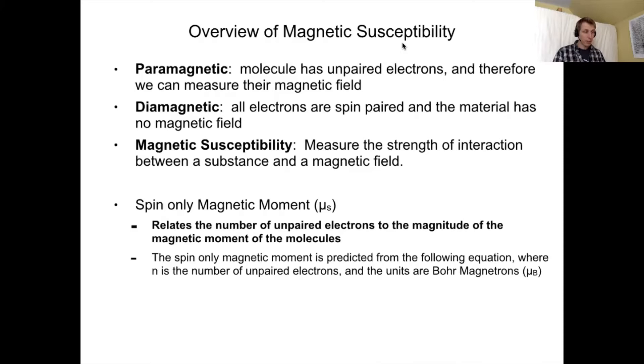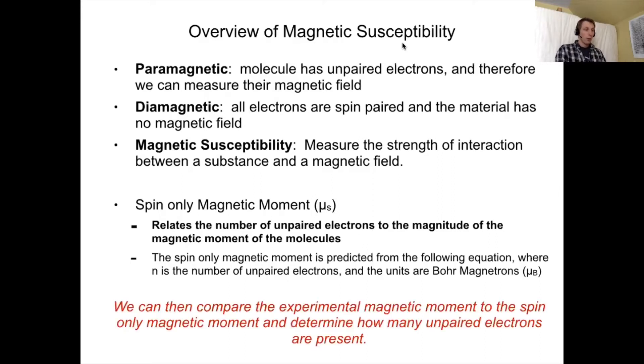We have what's known as the spin-only magnetic moment. This is a theoretical calculation and this is what we're going to compare to our experimental value that we gathered in lab. This relates the number of unpaired electrons to what the magnetic moment should be based on the number of unpaired electrons present. We will compare our experimental magnetic moment to this theoretical spin-only magnetic moment to determine how many unpaired electrons are present in our sample.